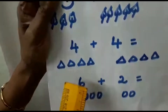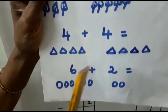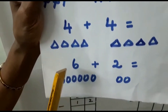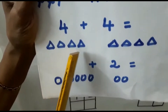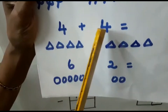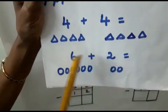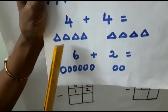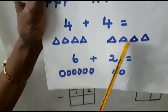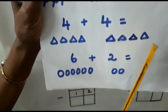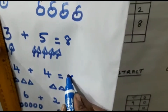Next, here again: 4 plus 4. How many triangles are there? 1, 2, 3, 4. Again plus 4: 1, 2, 3, 4. All together: 1, 2, 3, 4, 5, 6, 7, 8. 8 triangles.